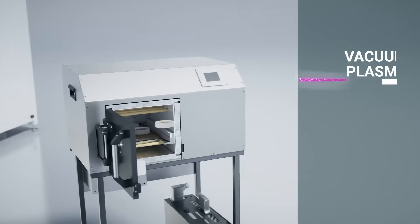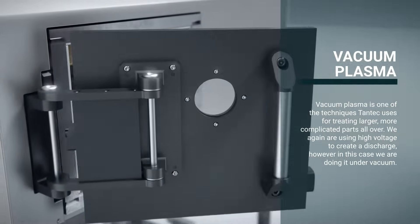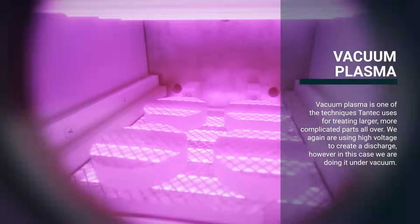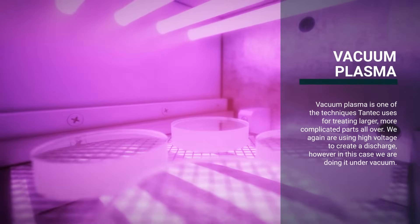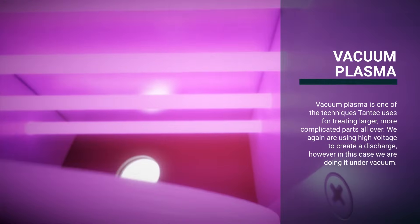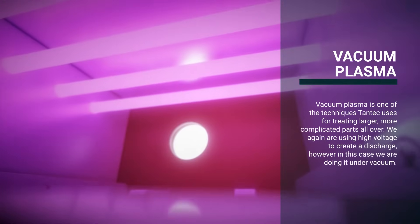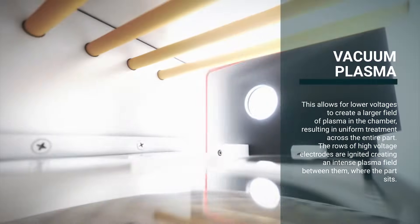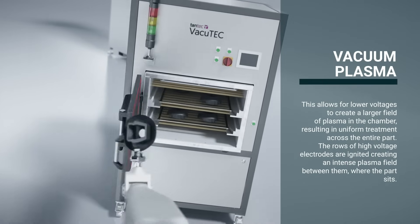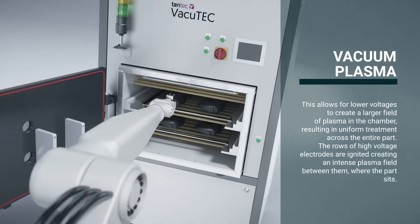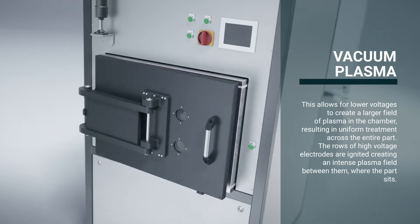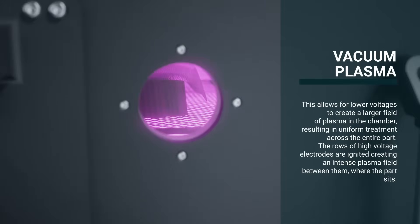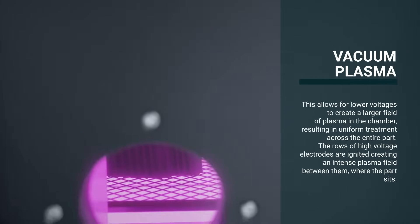Vacuum plasma is one of the techniques Tantec uses for treating larger, more complicated parts all over. We again are using high-voltage to create a discharge, however in this case we are doing it under vacuum. This allows for lower voltages to create a larger field of plasma in the chamber, resulting in uniform treatment across the entire part. The rows of high-voltage electrodes are ignited creating an intense plasma field between them, where the part sits.